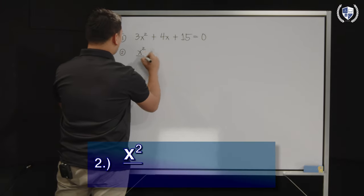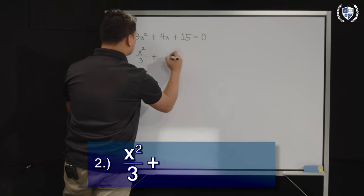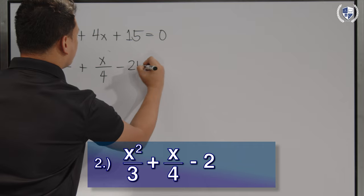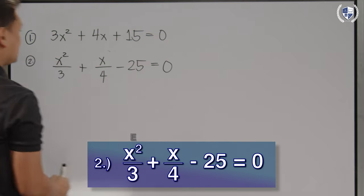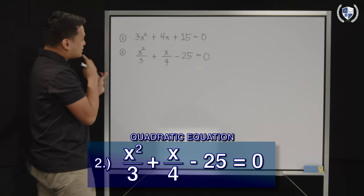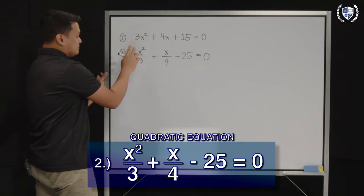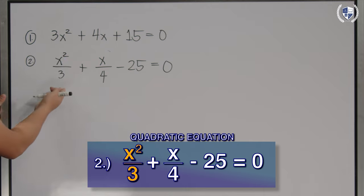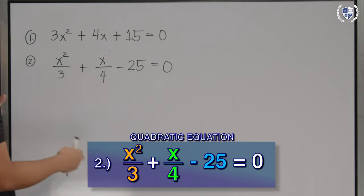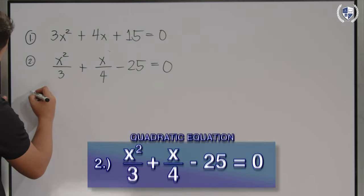Second one, x²/3 + x/4 - 25 = 0. This is also an example of a quadratic equation because still, we have the term ax², we have bx, we have c, and yeah, this is still a quadratic equation.